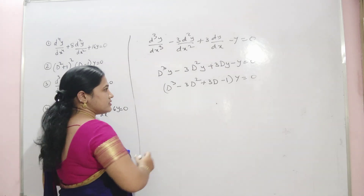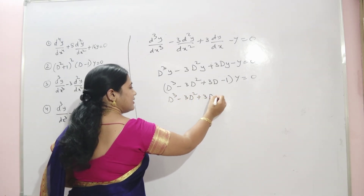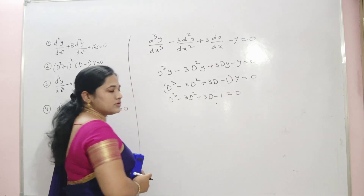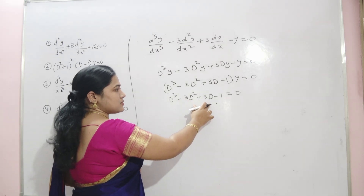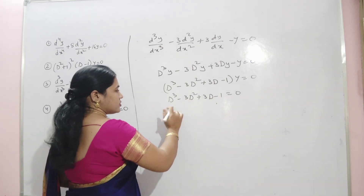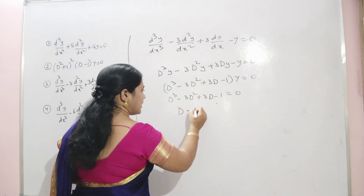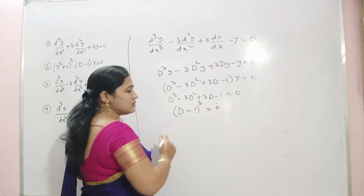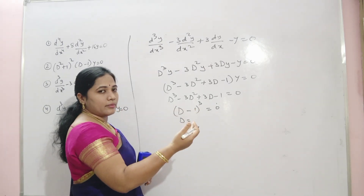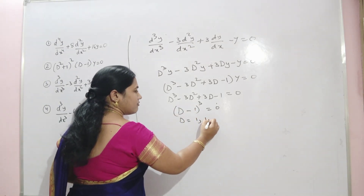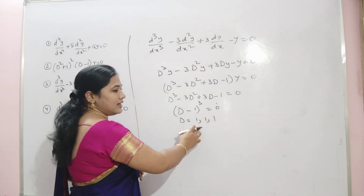The auxiliary equation is D³ − 3D² + 3D − 1 = 0. This is in the form a³ − 3a²b + 3ab² − b³, so it factors as (D − 1)³ = 0. The roots are D = 1, 1, 1 — three real and equal roots.